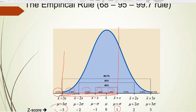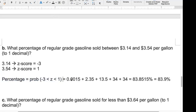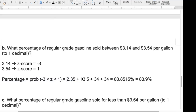Let me correct a mistake in my notes — the first number should be 2.35%, not what I wrote earlier. So the four numbers to add are: 2.35%, 13.5%, 34%, and 34%. Add those up to get the answer.